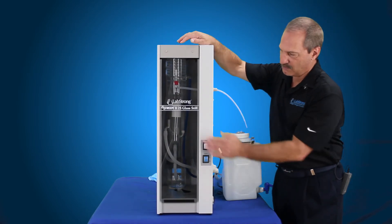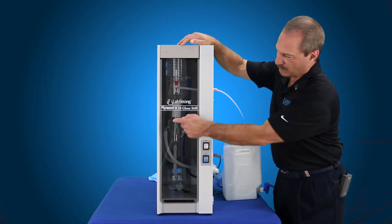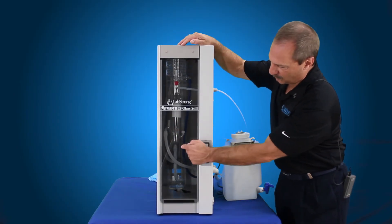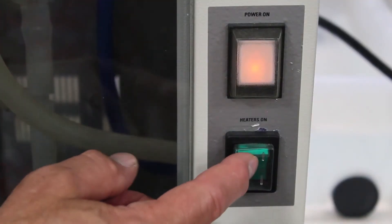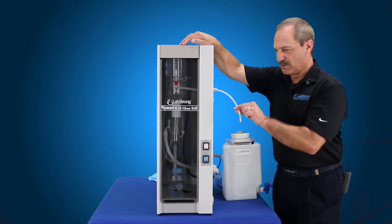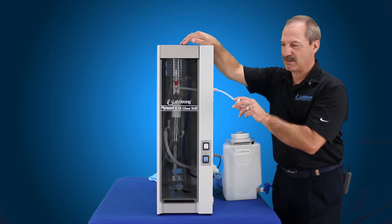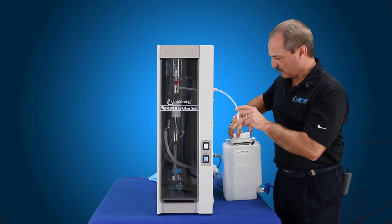We're just going to hit the power button to bring our water in. We're going to bring it up to our constant level device and overflow. Once it hits that point, we're going to go ahead and turn the heaters on so we can start distilling water. Then you want to run this to drain. After about four or five liters to drain, you want to go ahead and connect this back up to your tank.